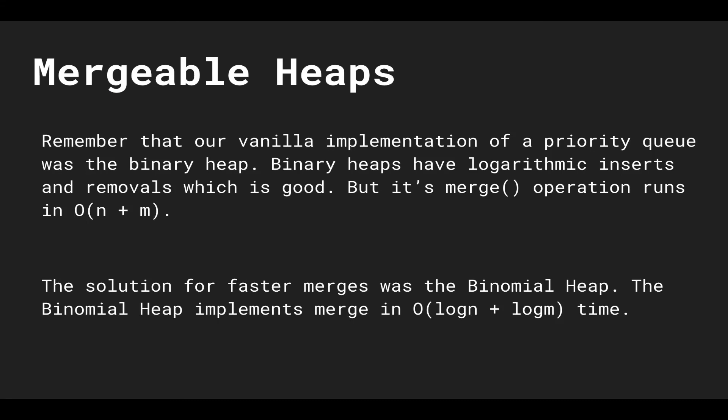Taking a step back, remember that our vanilla implementation of a priority queue was the binary heap. Binary heaps have logarithmic insertions and removals, which is good and fast, but the merge operation runs in linear time — O(n + m) — where n is the size of the first heap and m is the size of the second heap. We can achieve O(n + m) with the heapify technique: create a new binary heap, place elements of both heaps inside, and then heapify it.